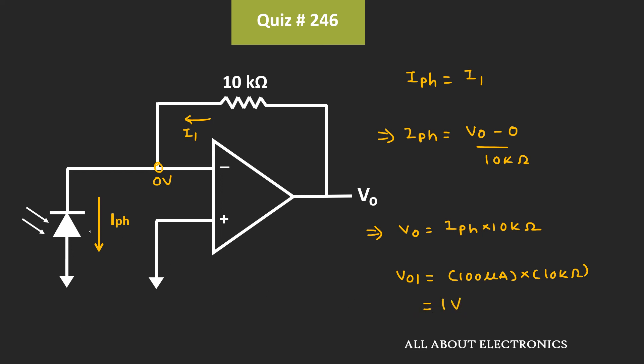And when the light falls on this photodiode, then this current increases to 200μA. So, let's say at that time, the output voltage is equal to V0-2. So this voltage V0-2 will be equal to 200μA times 10kΩ. That is equal to 2V.